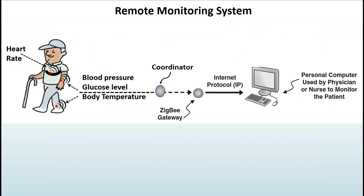Another interesting application is the remote monitoring system. A patient can wear Zigbee sensors that collect information such as blood pressure, body temperature, and heart rate. This information is sent through the Zigbee gateway over the internet to a personal computer in a hospital, so a physician or nurse can monitor the patient's health.